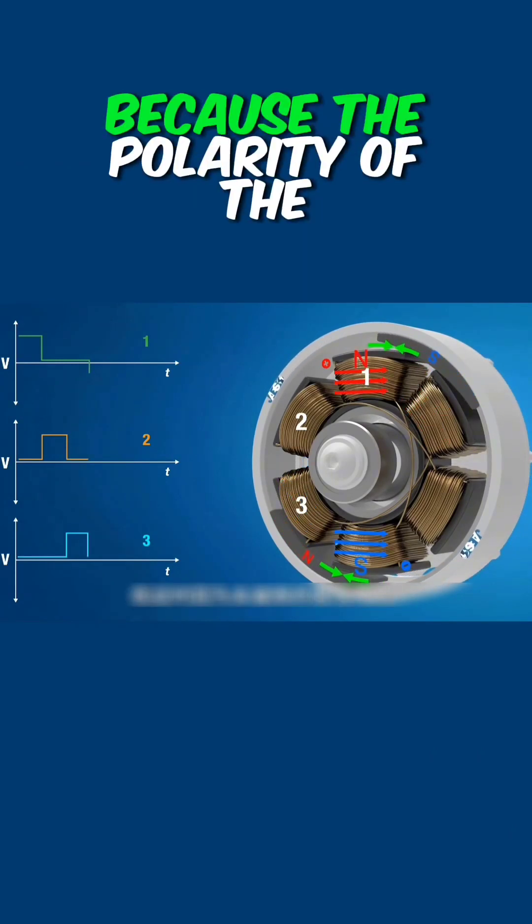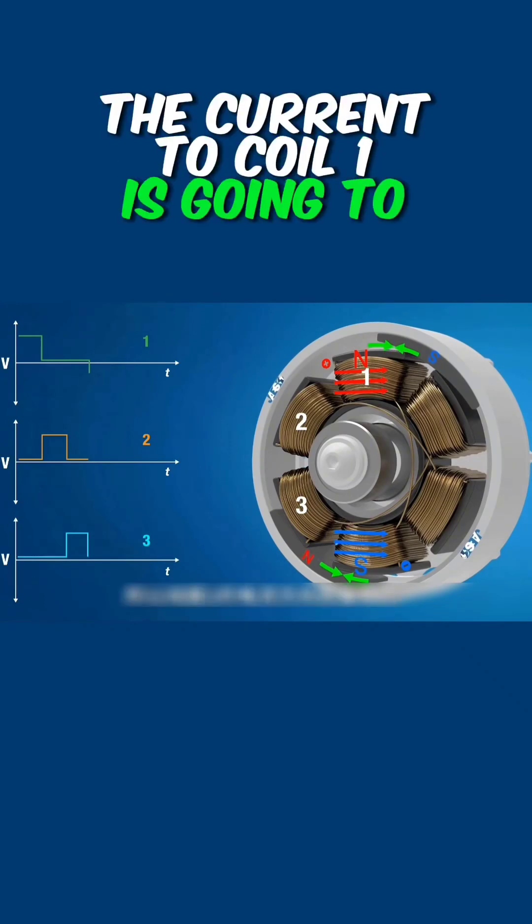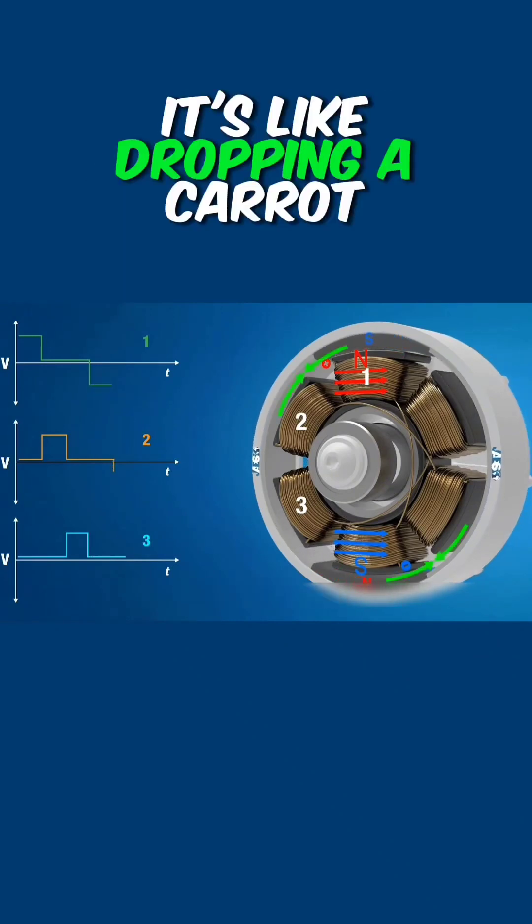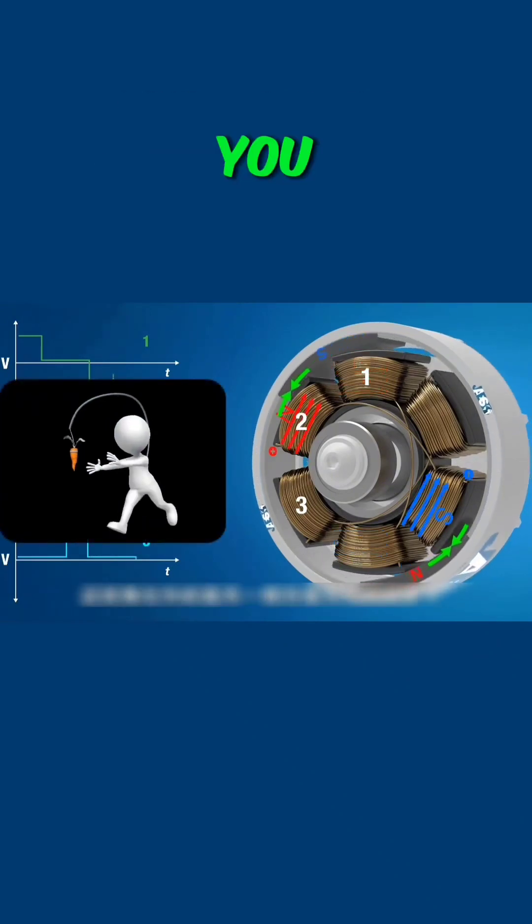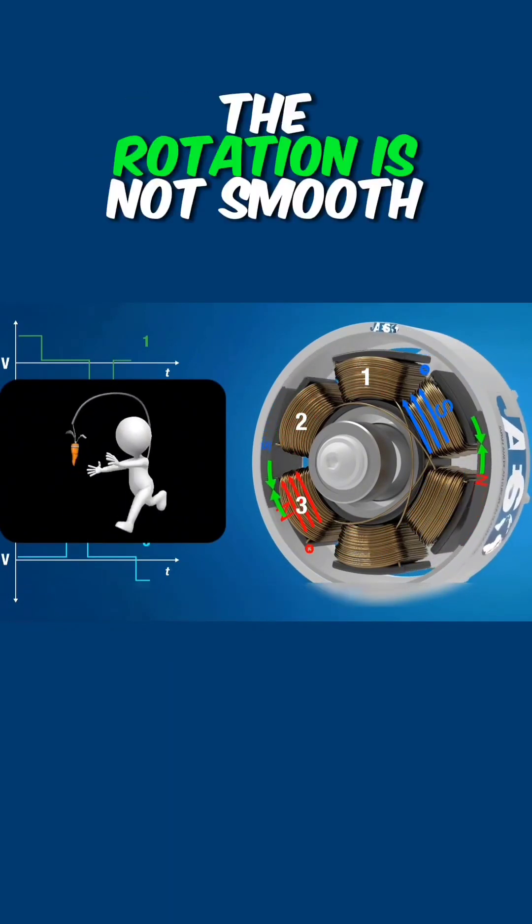But at this point, because the polarity of the permanent magnet is different, the current to coil 1 is going to be in a different direction and then continue to rotate attractively. It's like dropping a carrot in front of you to keep you running. But this is not efficient and the rotation is not smooth.